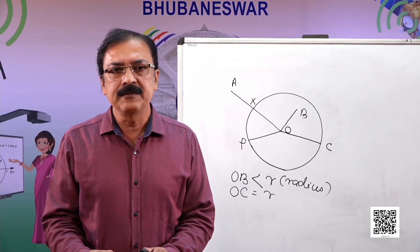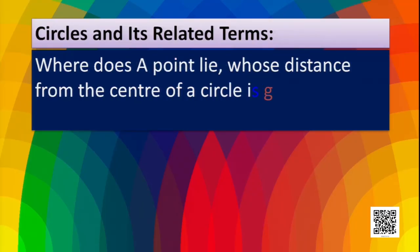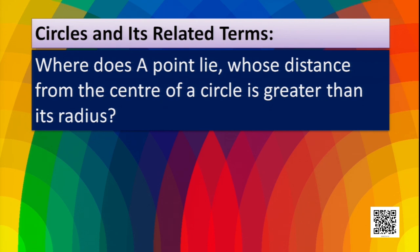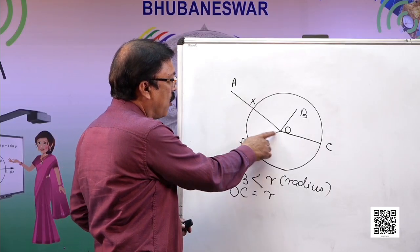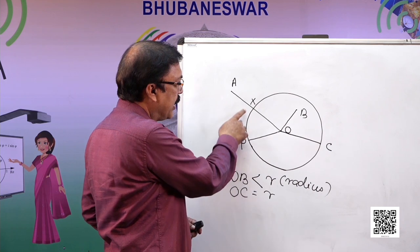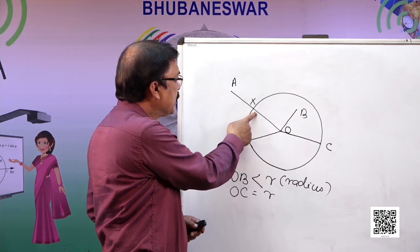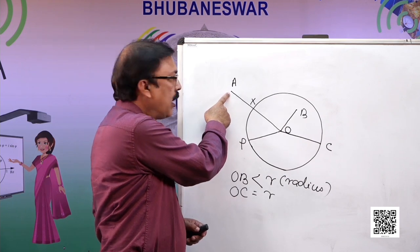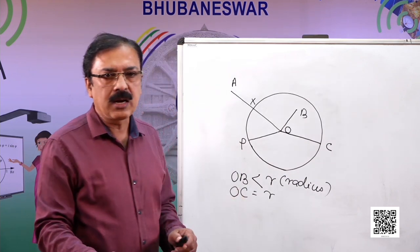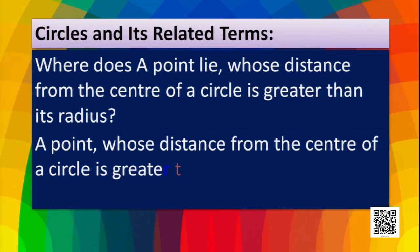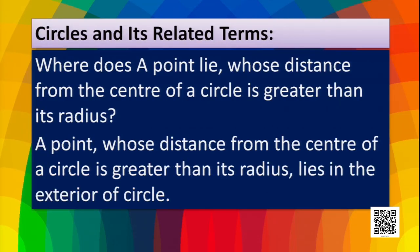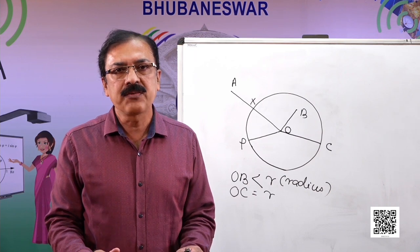Where does a point lie whose distance from the center of a circle is greater than its radius? As shown, OA is greater than radius OX, and from the figure A is in the exterior of the circle. So a point whose distance from the center is greater than the radius lies in the exterior of the circle.